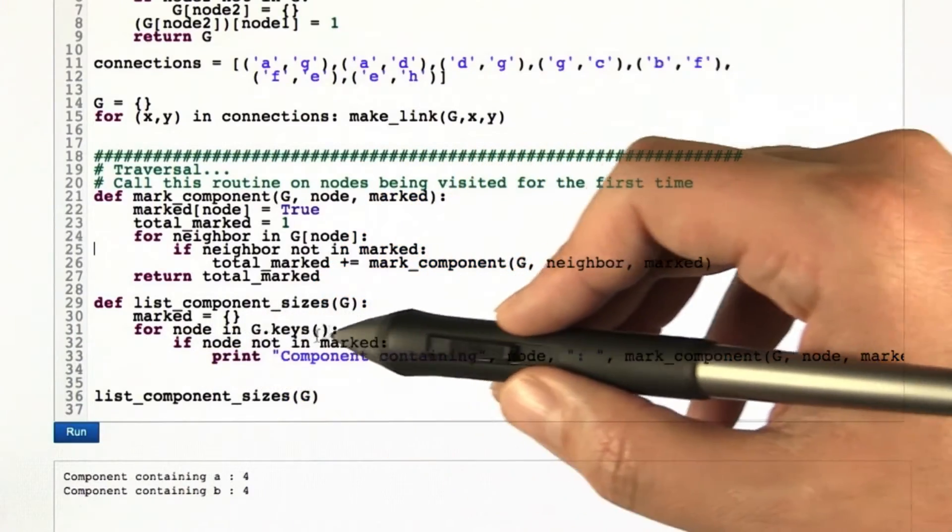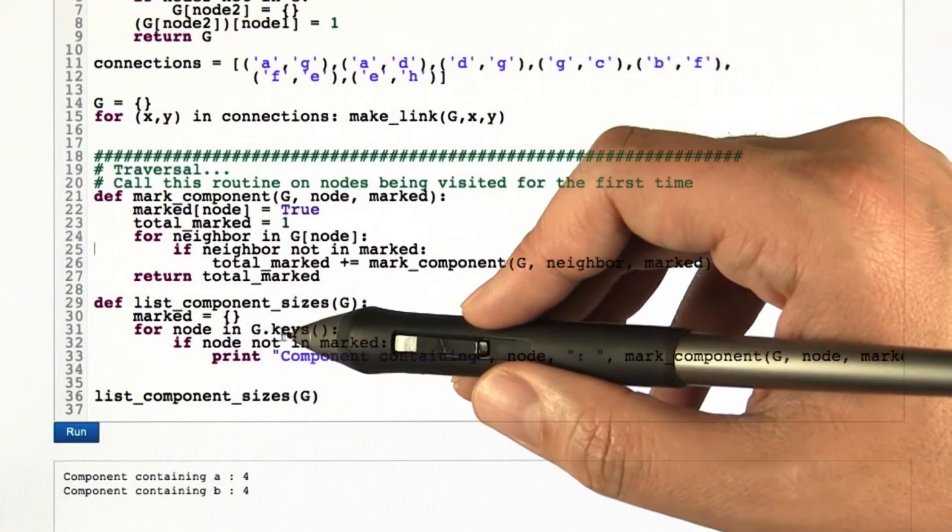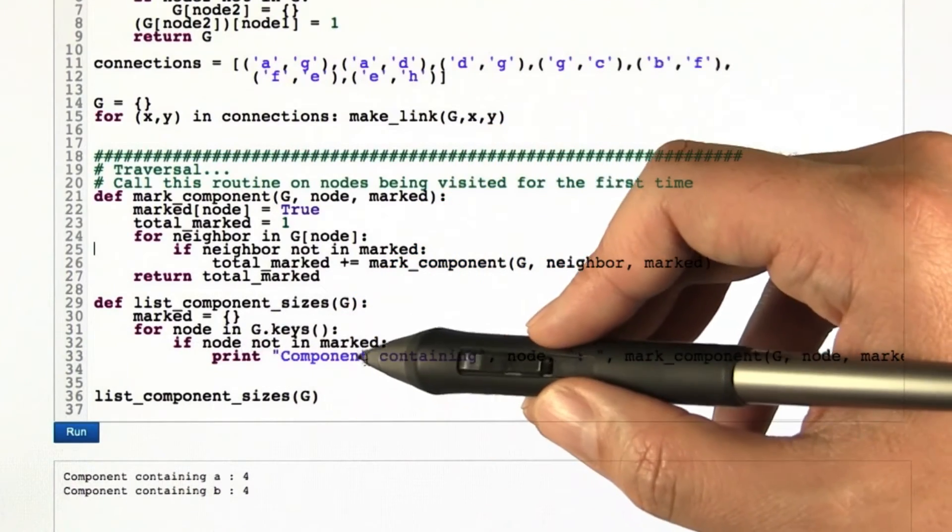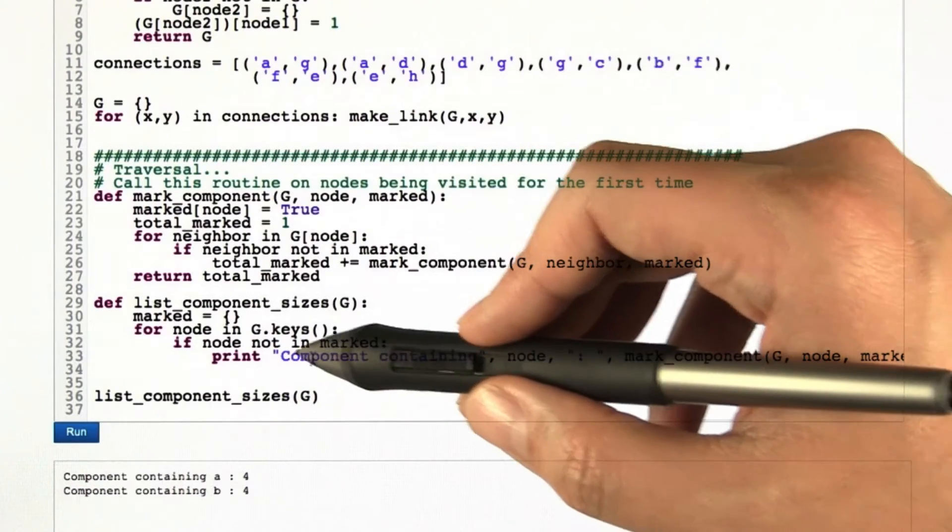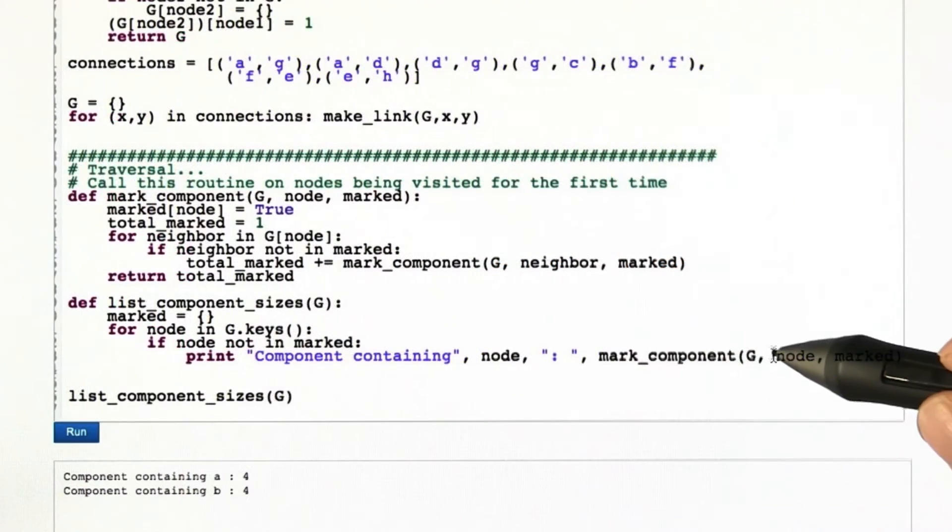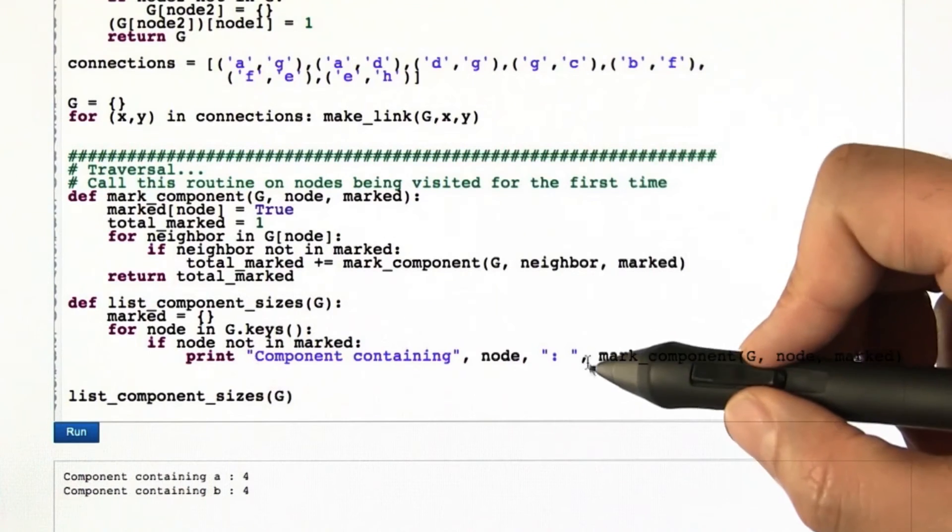For each one that we visit, if that node hasn't been marked in some previous iteration, then we've got a new component, and this node that we're just visiting is a part of that component. So we say, hey, we've got a component containing that node, and then what we do is we recursively go and mark all the things connected to that node, count up how many things got marked in that way, and then we return.